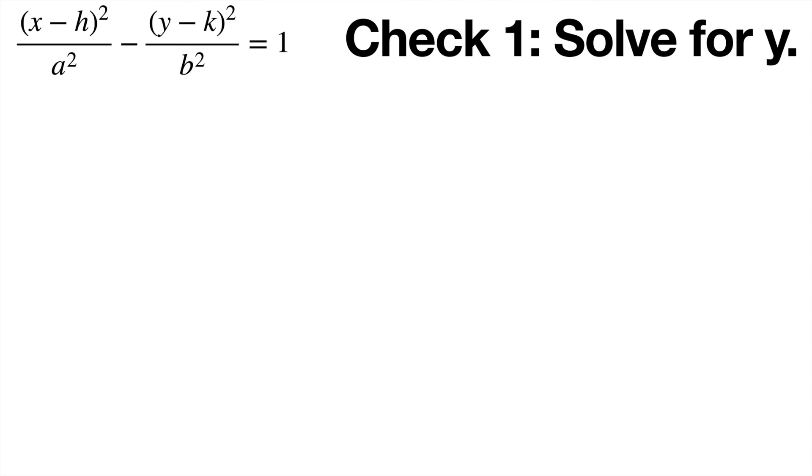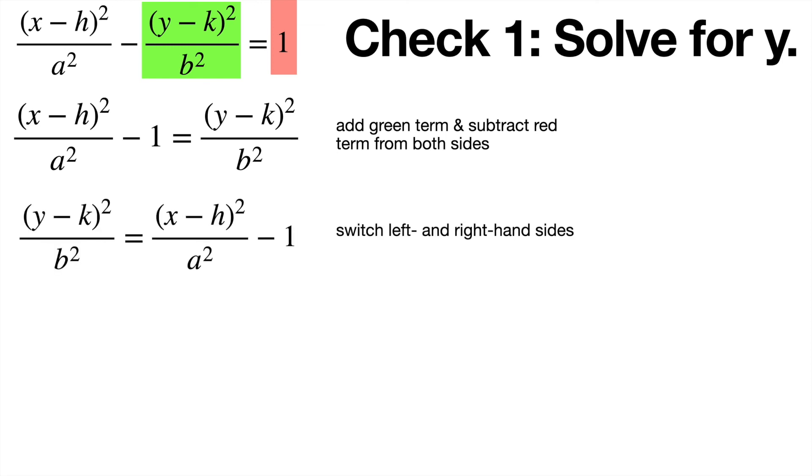In order to solve for y in this equation, we need to first get the y term by itself. So one thing we can do is add the y term, this green term, to both sides and subtract the 1 from both sides to get the y squared by itself. And then just reverse the order to have it on the left-hand side, just to make it nice and simple.